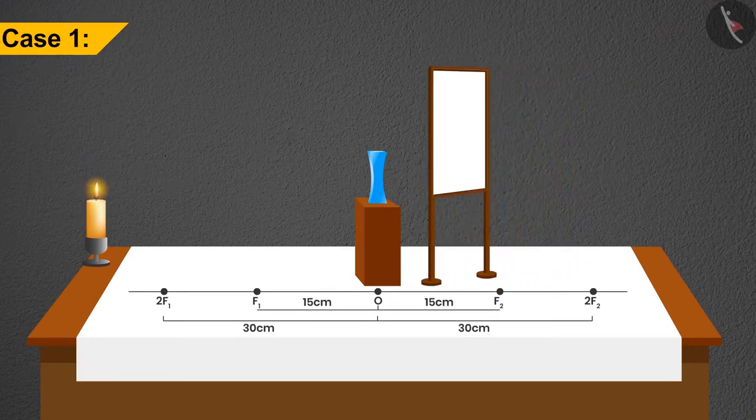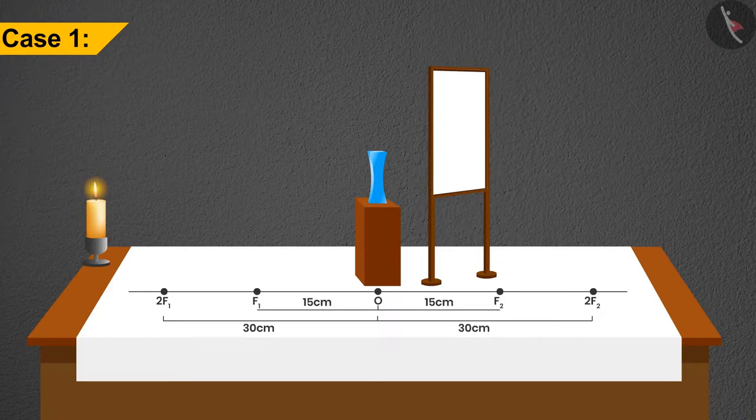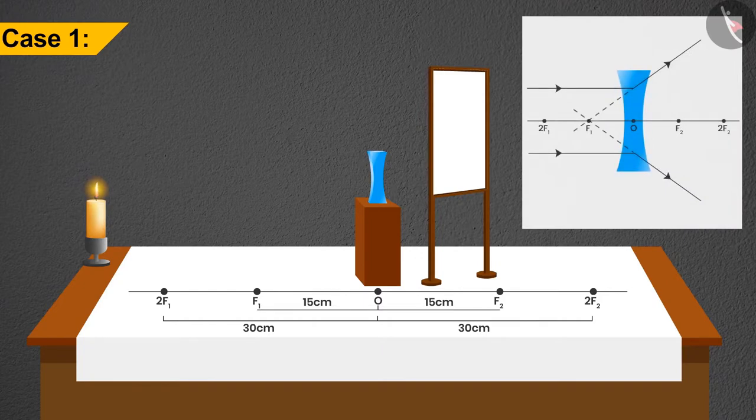No. This means that the concave lens creates a virtual image in this case. If we remove the screen and look, we can find that the image is made at the focus on the first side, which is highly diminished in size and erect.